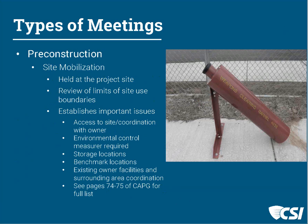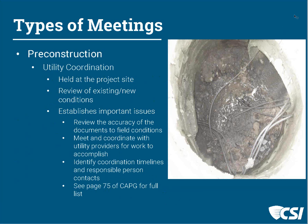Utility coordination meetings are also often held at the site, looking at existing utilities within an existing facility or coordinating new utilities. This should involve local utility suppliers as well as the appropriate owner's representatives to discuss accuracy of documents and where utilities are located. You're identifying responsible people and timelines, as utility work can take a substantial amount of time to organize. More information is listed on page 75 of the practice guide.